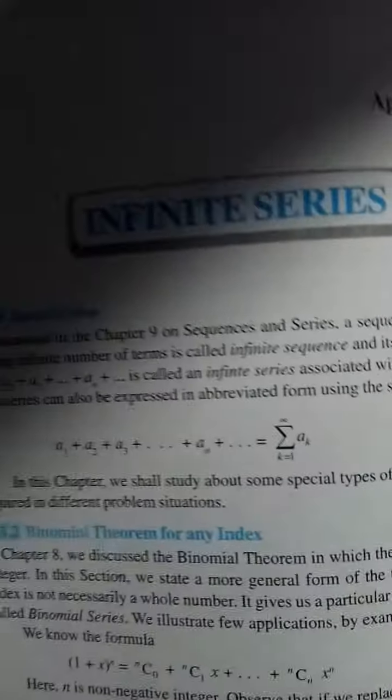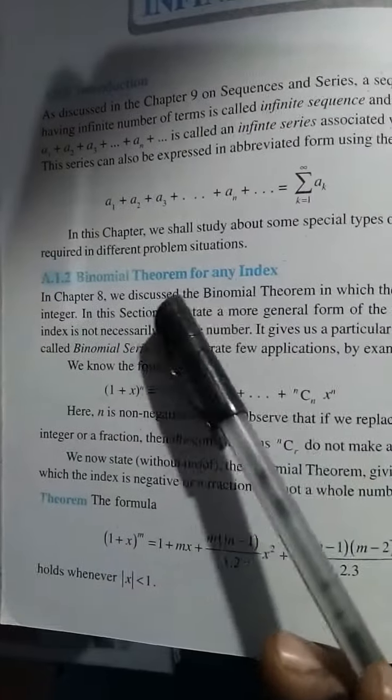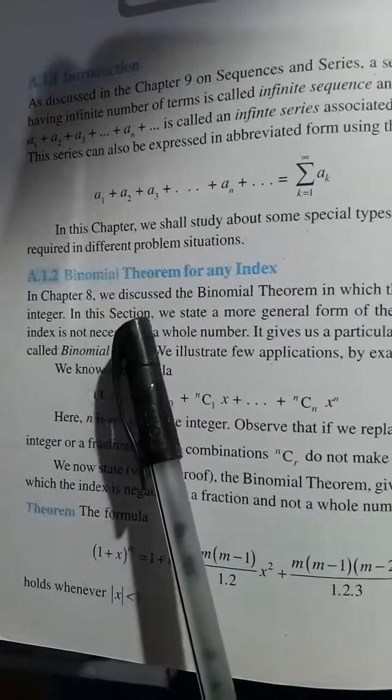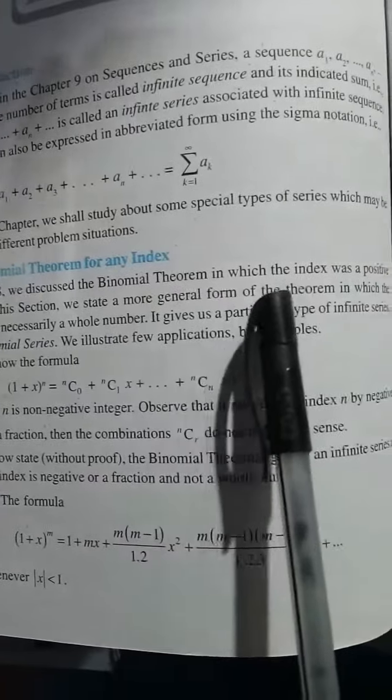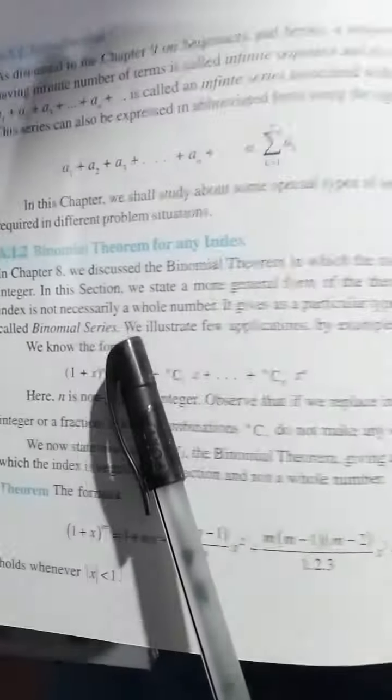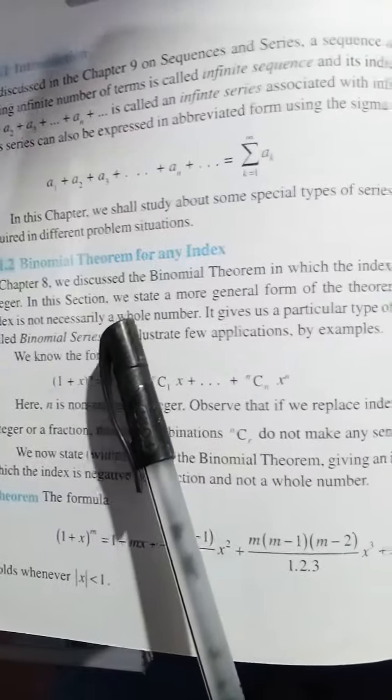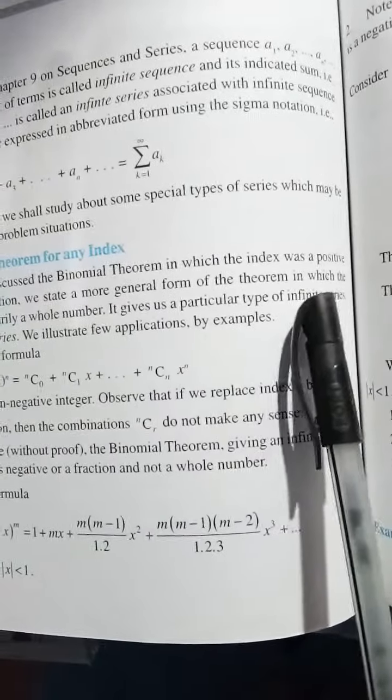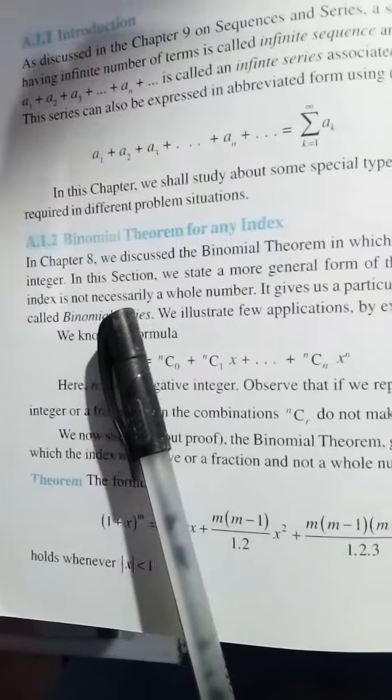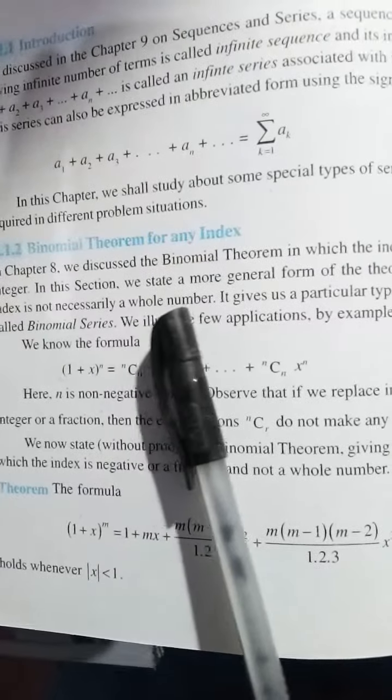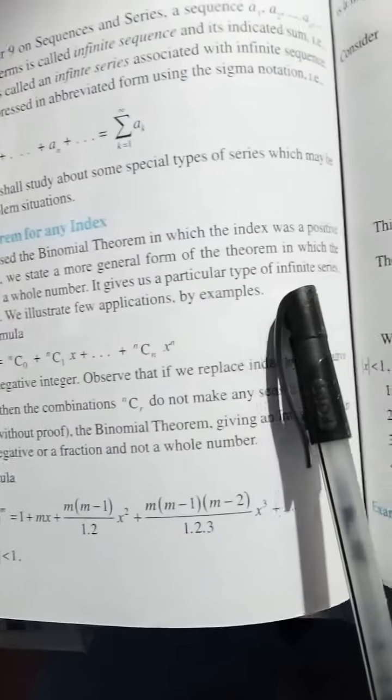Dear math aspirants, right now I have the binomial theorem for any index. In Chapter 8, we discussed the binomial theorem in which the index was a positive integer. In this section, we state a more general form of the theorem in which the index is not necessarily a whole number. It gives us a particular type of infinite series.